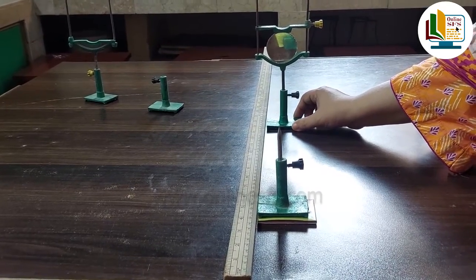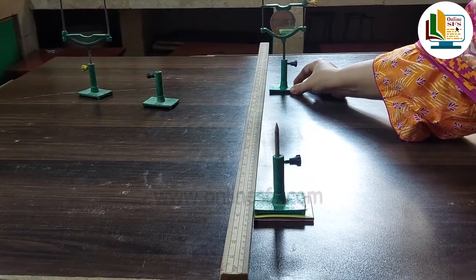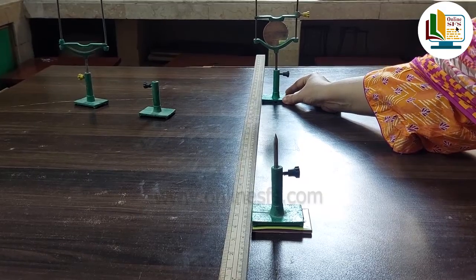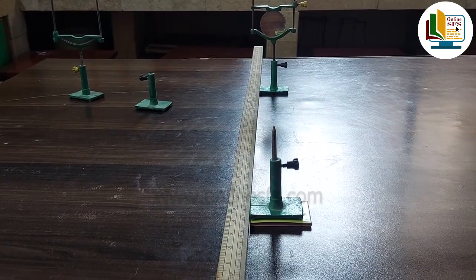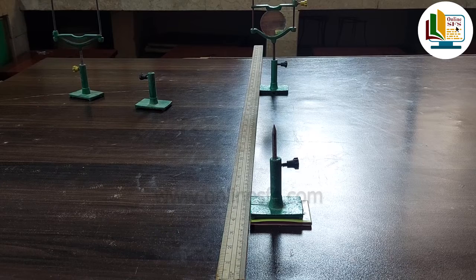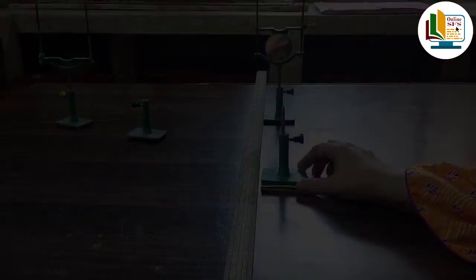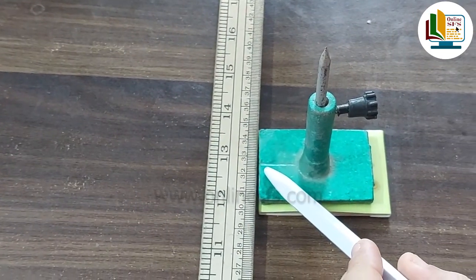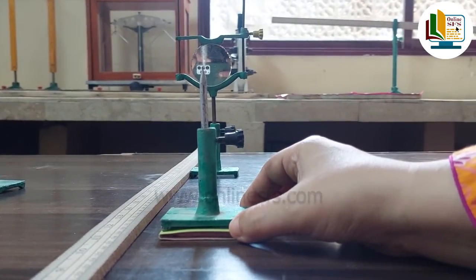Similar manner mein hum third set of observations lehenge to find out r3 and its corresponding focal length f3. Third set of observations ke liye position of mirror 60 cm rakhenge and position of pin b is found to be at 32.5 cm having a real sharp image.